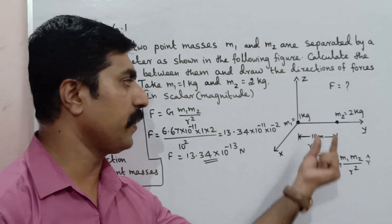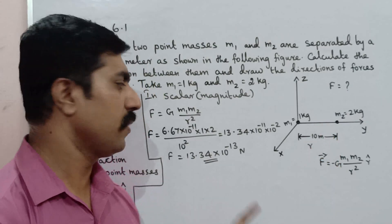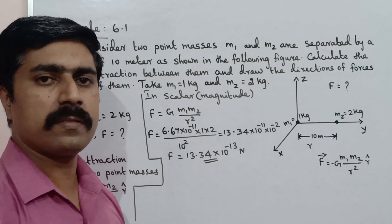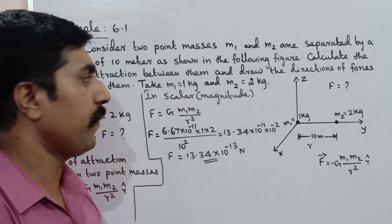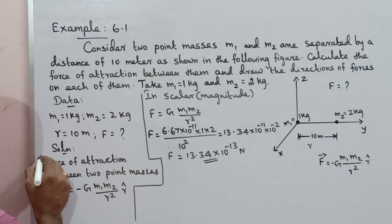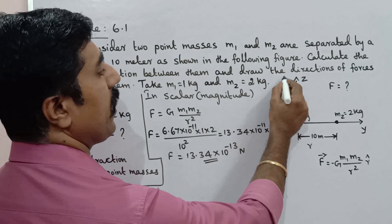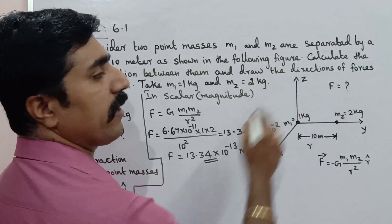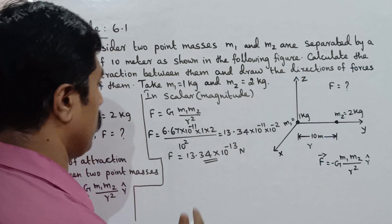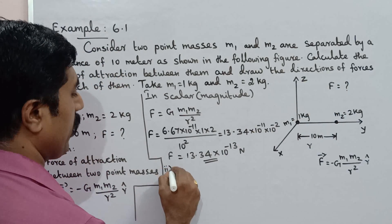The force is approximately 13.34 × 10⁻¹³ Newton — attractive force. The values are given. Good. That completes the first part — the force calculation. Now draw the directions of forces on each of the two masses.